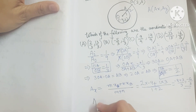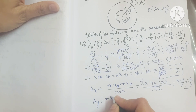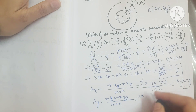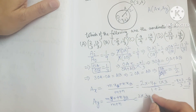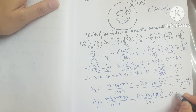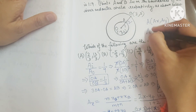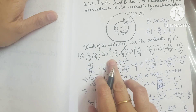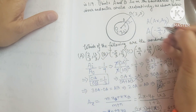For AY: (m times Y_O plus n times Y_B) by (m plus n) equals (2 times 3 plus 1 times 5) by 3 equals (6 plus 5) by 3 equals 11 by 3. So the coordinates of A are minus 5 by 3 comma 11 by 3. Checking the options, this matches option B. So the answer for question number 4 is B.